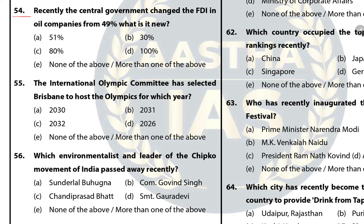Question 54: Recently the central government changed the FDI in oil companies from 49% to? The answer is D — 100%. Question 55: The International Olympic Committee has selected Brisbane to host the Olympics for which year? The answer is C — 2032.